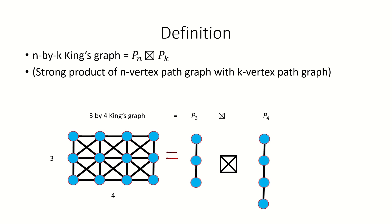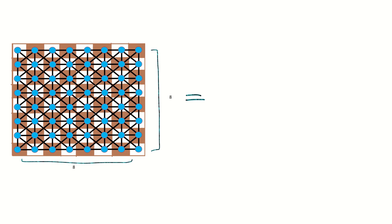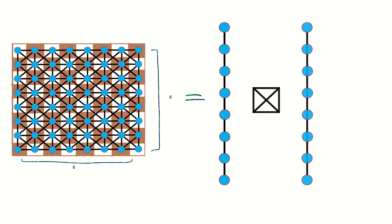I recommend you watch my video on strong products of graphs if you haven't already, as strong products will be very important in this video. Using our new definition, the king's graph corresponding to our typical 8×8 64-square chessboard is the strong product of two path graphs with 8 vertices each.